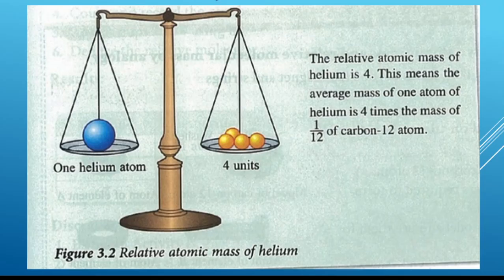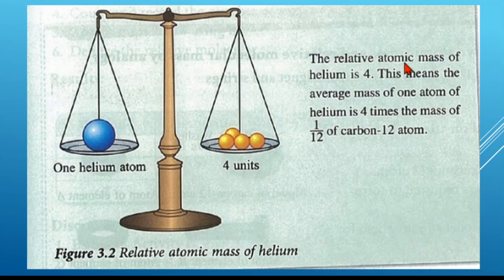For example, here in Figure 3.2, the relative atomic mass of helium — one helium atom equals four units. So the relative atomic mass of helium is 4. This means that the average mass of one atom of helium is four times the mass of 1/12 of a carbon-12 atom.